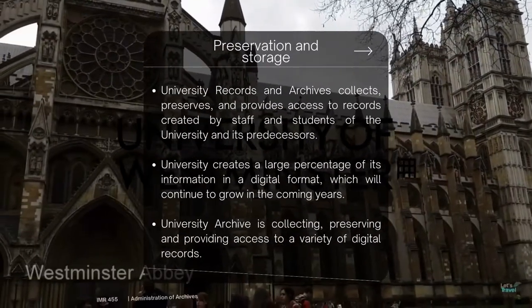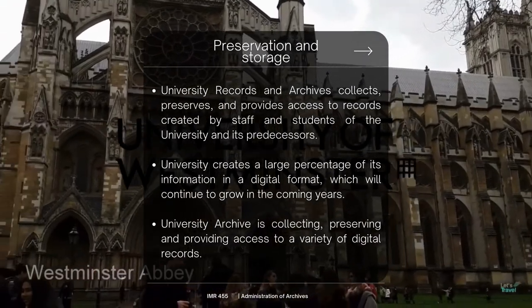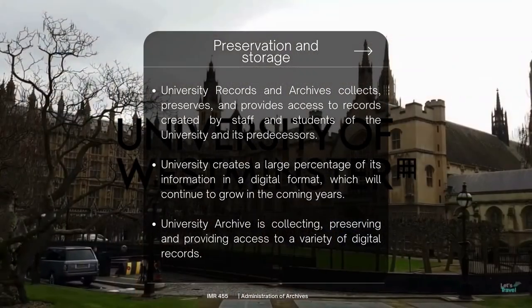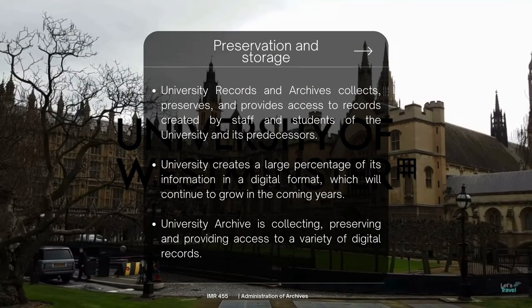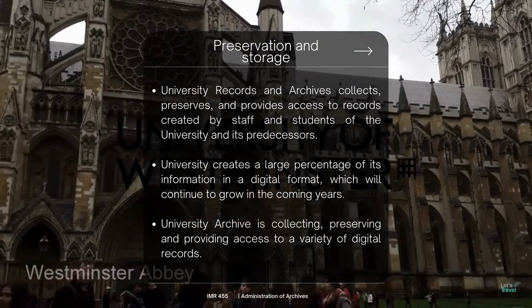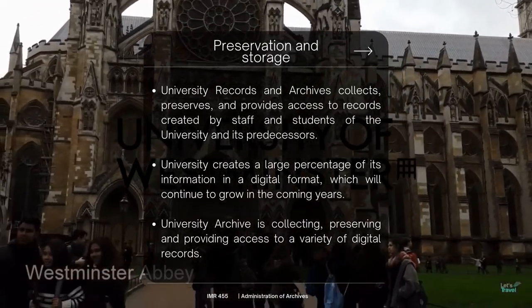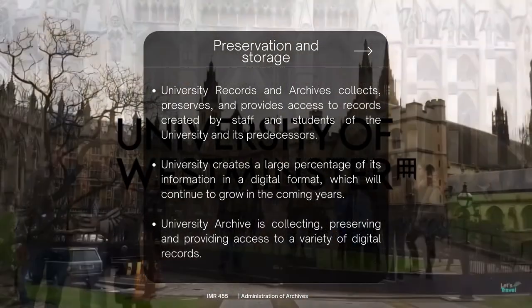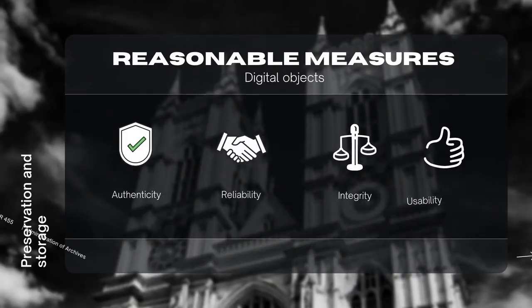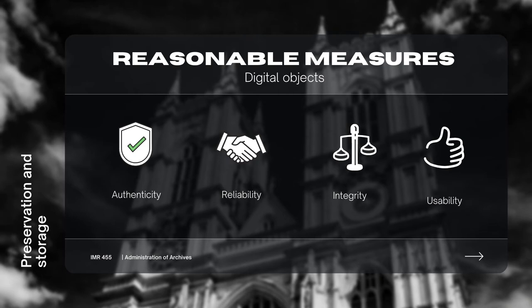For preservation and storage, the University Records and Archives (URA) collects, preserves, and provides access to records created by staff and students of the university and its predecessors. It creates a large percentage of its information in digital format, collecting, preserving, and providing access to a variety of digital records. URA will take all reasonable measures to ensure digital objects managed and preserved by them remain trustworthy and accessible.